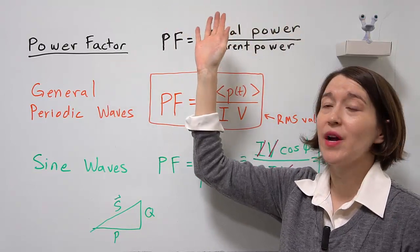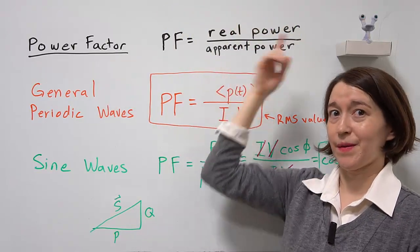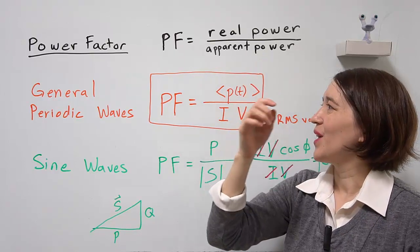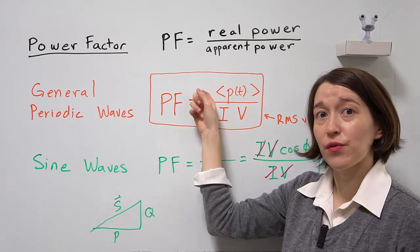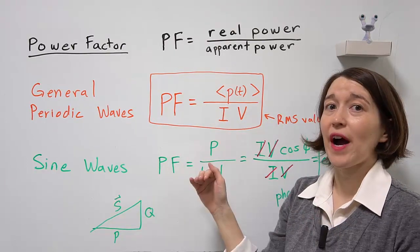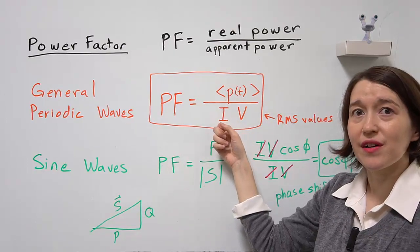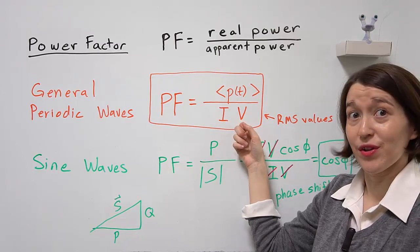So think of our analogy to remember that. For a general periodic waveform, you have to find the average power over the period and then you divide by the RMS value of the current times the RMS value of the voltage.